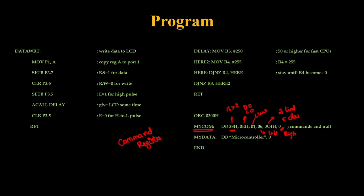At the end of MYCOM I place a zero - we will understand why when we get into the programming. After the command register I also have a data register. MYDATA will hold the data bytes - it takes byte representation - so it holds 'microcontroller' as a string inside double quotation marks for the display. After that I push the value zero. The first section gives instructions to the LCD screen and the second section gives the character string to display.